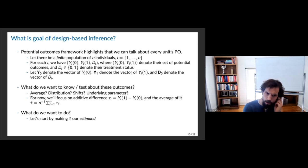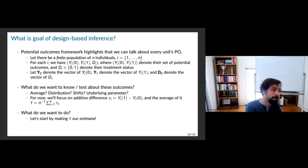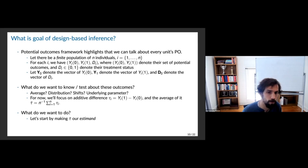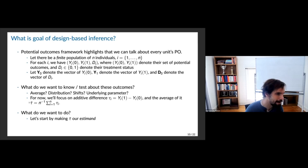What do we want to know or test about these outcomes? There are many possibilities — the average, shifts in the distribution, something about an underlying economically meaningful parameter. We'll focus on a simple one: the additive difference, and the average additive difference in potential outcomes. This is defined as the average of each person's individual treatment effect — this is the average treatment effect, or ATE — the effect if we treated everyone in the population. Our estimand is tau-bar.